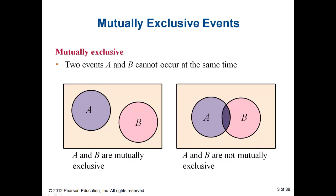First, the definition of events being mutually exclusive. Two events A and B that cannot occur at the same time are mutually exclusive. As you can see in the graph on the left side, there's no intersection between A and B — they cannot occur at the same time, so these are mutually exclusive.